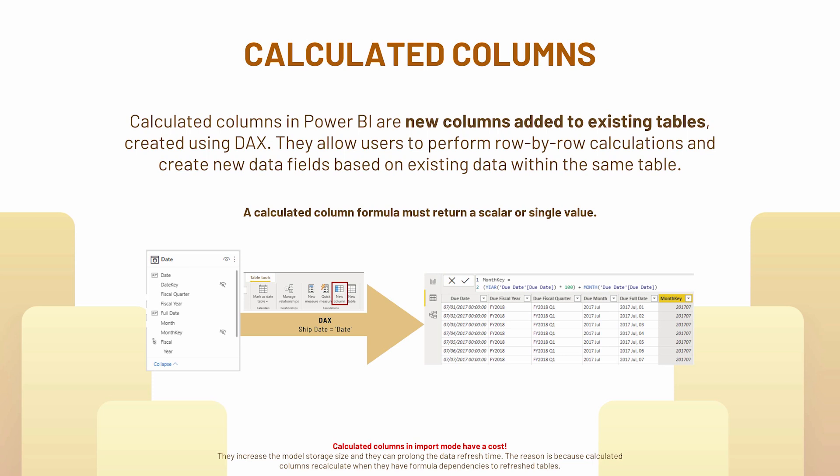In this case you can use DAX functions to create another column — for example a month key, a sorting key, or deriving a month-year column from your date column. Here the calculation happens row by row, and that is what we also call the row context. Please be aware that it also comes at a cost in import mode, because the calculated column will increase the storage size and again it can take a lot of time to refresh your dataset.